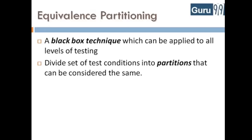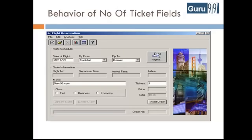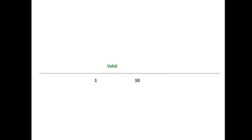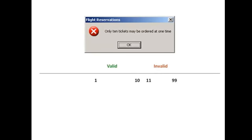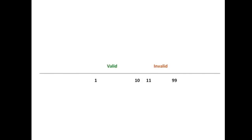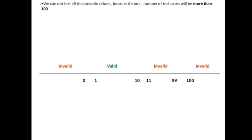To understand equivalence partitioning with an example, consider the behavior of tickets in the Flight Reservation application while booking a new flight. Ticket values 1 to 10 are considered valid and the ticket is booked. Values 11 to 99 are considered invalid, and the error message 'only 10 tickets may be ordered at one time' is shown. On entering values 100 and above, the ticket number defaults to a 2-digit number. On entering values 0 and below, the ticket defaults to 1. We cannot test all possible values, so we use equivalence partitioning: divide the possible values into groups or sets — called equivalence partitions or equivalence classes — and pick only one value from each partition for testing. The hypothesis is that if one condition in a partition passes, all others will also pass; likewise, if one fails, all others in that partition will fail.